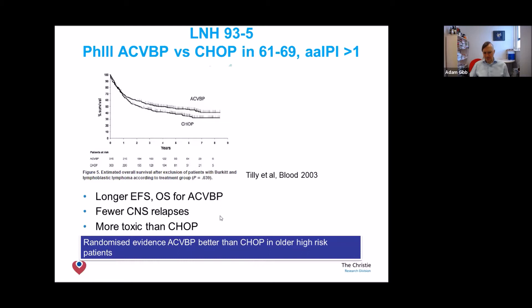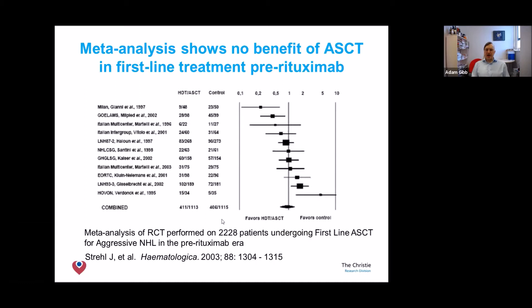There have been many trials about whether a stem cell transplant in first remission after R-CHOP can reduce the risk of relapse and increase the chance of cure. To summarize all the results: it is neither better nor worse to have a stem cell transplant in first remission — it simply doesn't make any difference.